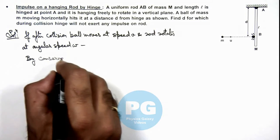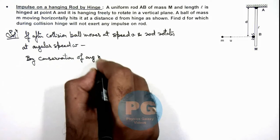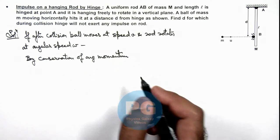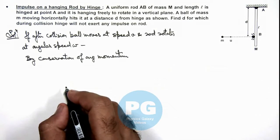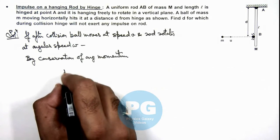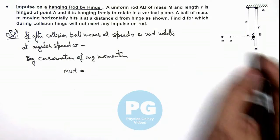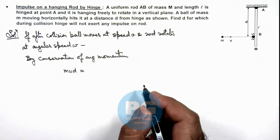Here we have the initial angular momentum about the hinge we can write, this is m u d. And after collision, the angular momentum, if the rod is rotating at angular speed omega and ball is moving with a speed v.